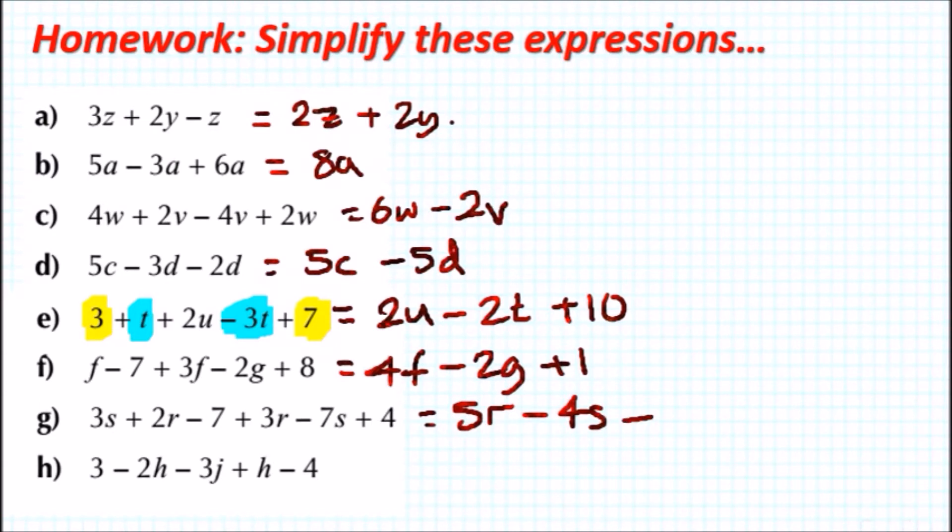Finally h, to wrap this up. We've got 3 - 2h - 3j + h - 4. Again, starting with the numbers this time, we've got 3 take away 4 is -1. And then solve the h's: -2h + h is -h. And then we're just left with -3j because that's all there is.